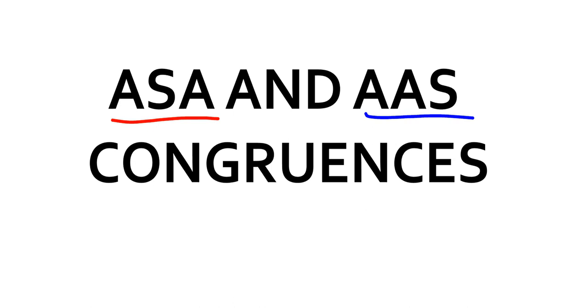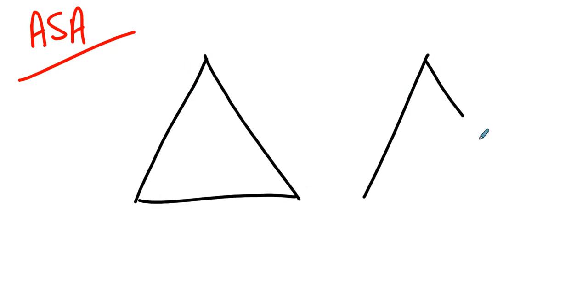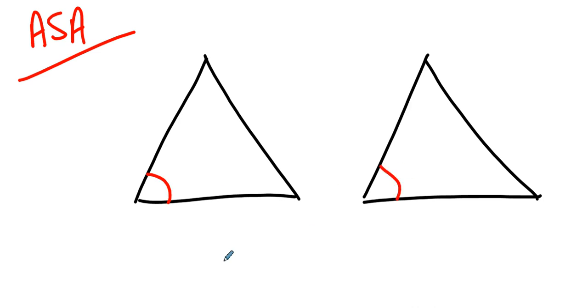So what gives us the idea that something might work? Consider the angle-side-angle case. The angle-side-angle case says: if I have a triangle and another triangle, and I've got this angle and that angle congruent, this side and this side congruent, and this angle and this angle congruent — is it true that the triangles are congruent? The question really boils down to this: